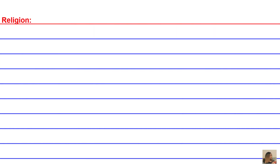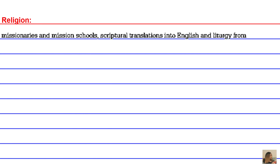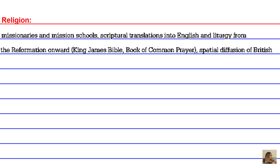Religion is another reason for the worldwide spread of English. This includes missionaries and mission schools, scriptural translations into English, and liturgy from the Reformation onwards — such as the King James Bible, the Book of Common Prayer, and the spatial diffusion of British Protestantism.